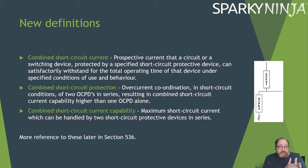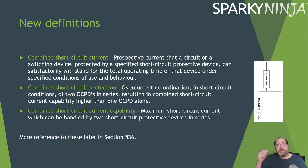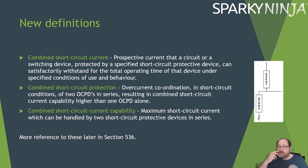This is the current that a circuit, device, switch, or component can tolerate while the short circuit protective device protecting that circuit is operating. We also have combined short circuit protection, which regards two short circuit protective devices in series — two OCPDs — covering overcurrent coordination in short circuit conditions, as illustrated, resulting in a combined short circuit current capability higher than either device alone. These will be introduced in Section 536 in a later Part 5 video.